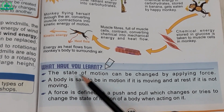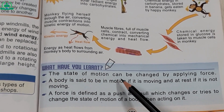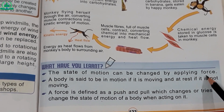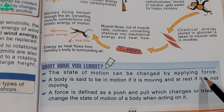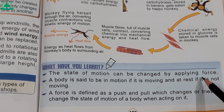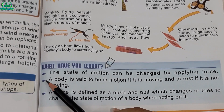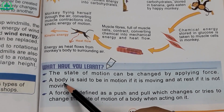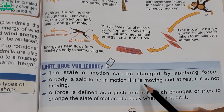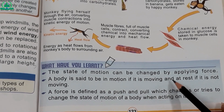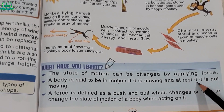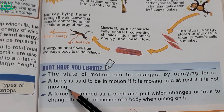Some important points of this chapter: Number one — the state of motion can be changed by applying force. (Force apply karne se harakat ki halat ko change kiya ja sakta hai.) Number two — a body is said to be in motion if it is moving, and at rest if it is not moving.